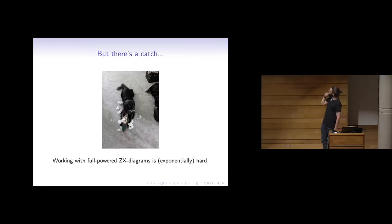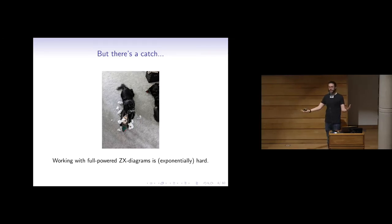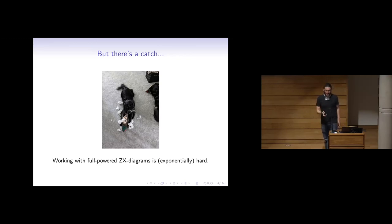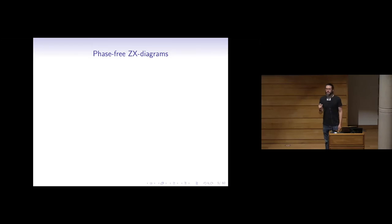But there's a catch: if I want to work with the fully powered ZX calculus, in general, working with that calculus is going to be exponentially hard. If I have two arbitrary diagrams with arbitrary angles and want to translate one to the other, I probably have to blow up the diagram to something exponentially large and then maybe shrink it back down — because there are exponentially many different unitary matrices representable. So even though we have this very powerful complete calculus, that's a good reason to focus on fragments.